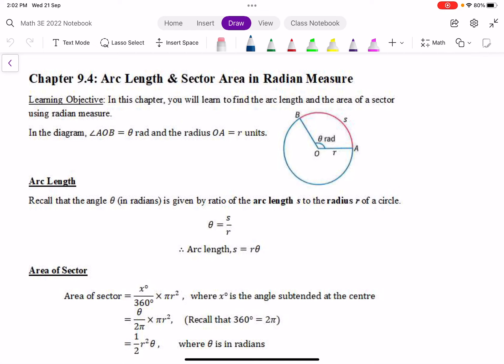In this chapter, you will learn to find the arc length and the area of the sector using radian. Recall in 9.1 and 9.2, we found the arc length and area of the sector, but your angle was in degrees.